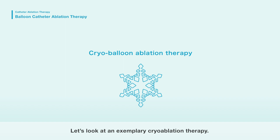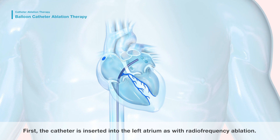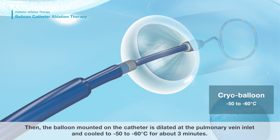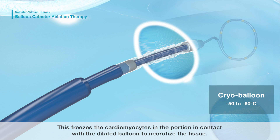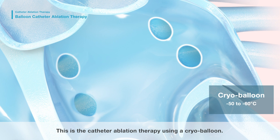There are three types of balloon catheters used for ablation therapy. In cryo ablation therapy, the catheter is inserted into the left atrium as with radio frequency ablation. Then the balloon mounted on the catheter is dilated at the pulmonary vein inlet and cooled to minus 50 to minus 60 degrees Celsius for about three minutes. This freezes the cardiomyocytes in the portion in contact with the dilated balloon to necrotize the tissue. This series of procedures is performed for all four pulmonary veins.